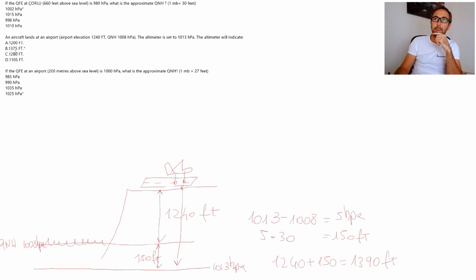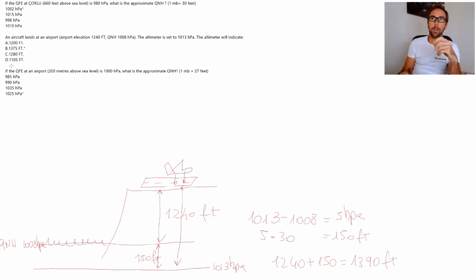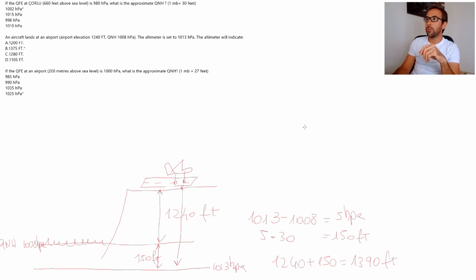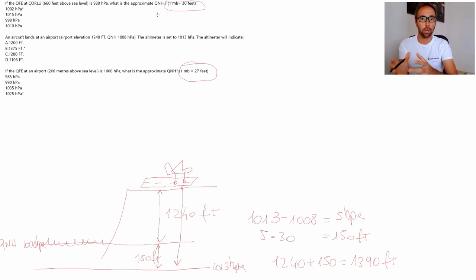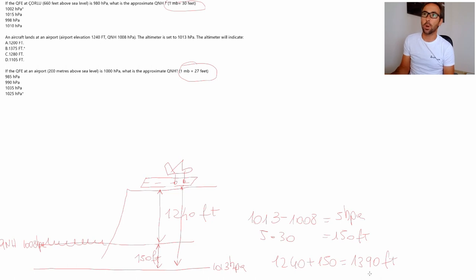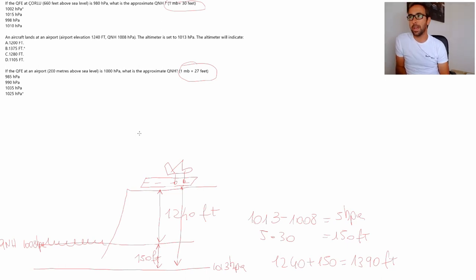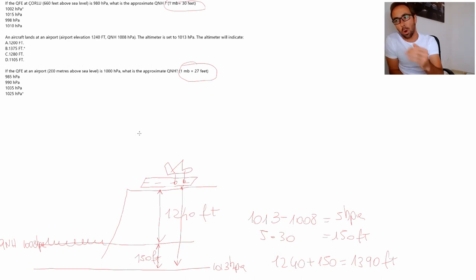Looking at the answers, answer B is the correct one and it's 1375. It's not 100% matching because in example two they might be using a different conversion. As you can see in question three, they're using 27 feet per hectopascal, while in example one they used 30 feet. Normally they use either 27 or 30 feet per hectopascal. You need to try both calculations if you don't come up with the right number. The most important thing is that you know how it works.